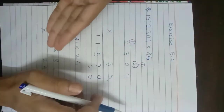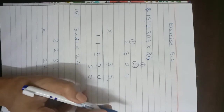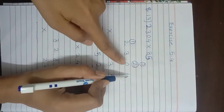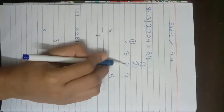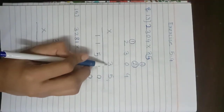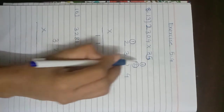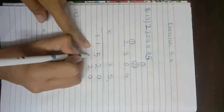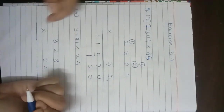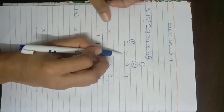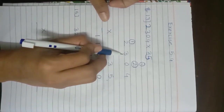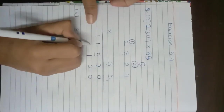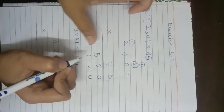Tens place of the multiplicand is 0. 0 multiplied by 3 is 0; 0 plus carry 1 is 1, so we write 1 under the hundreds place column. Hundreds place is 3: 3 multiplied by 3 is 9, so write 9 under the thousands place column. Thousands place is 2: 2 multiplied by 3 is 6, so write 6.